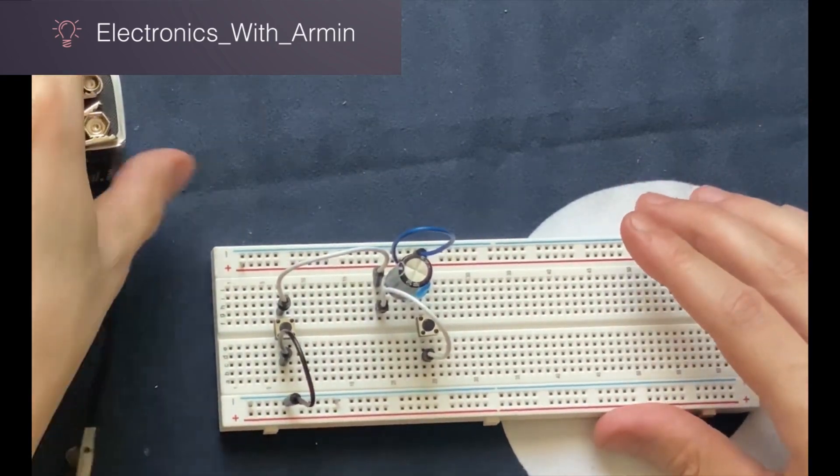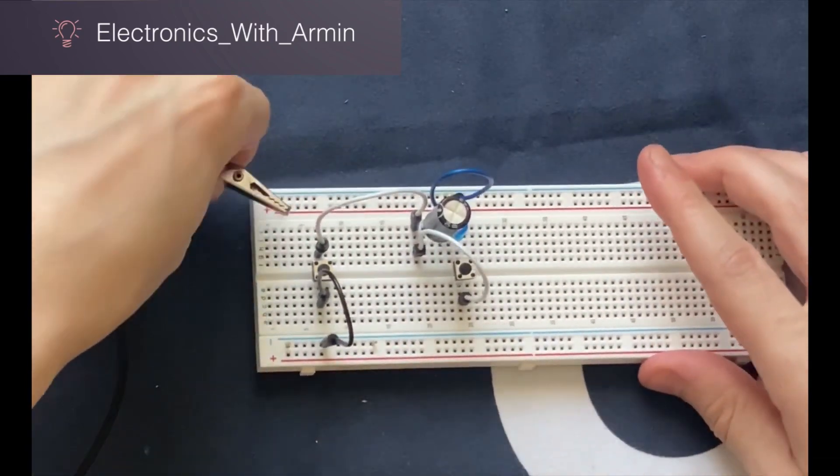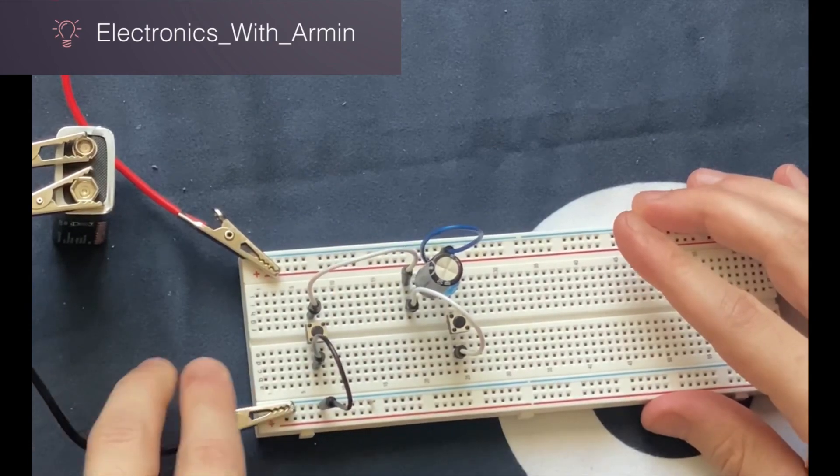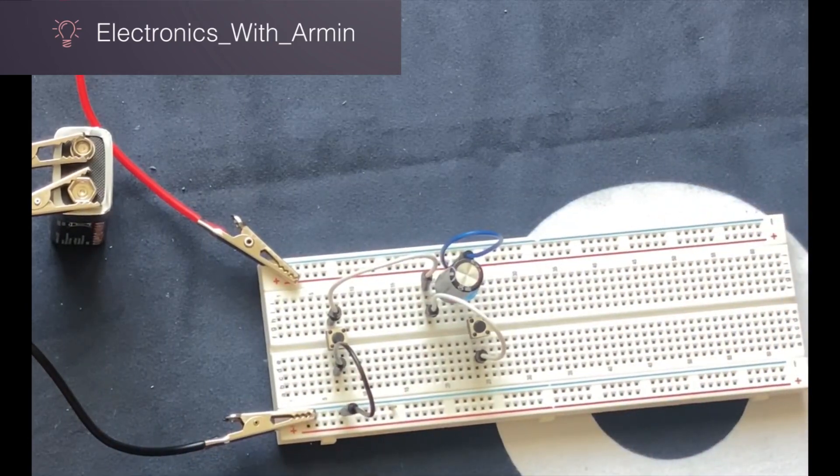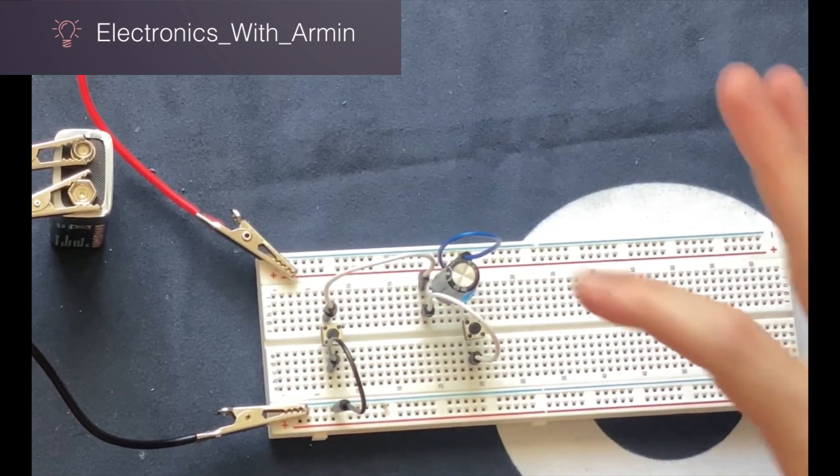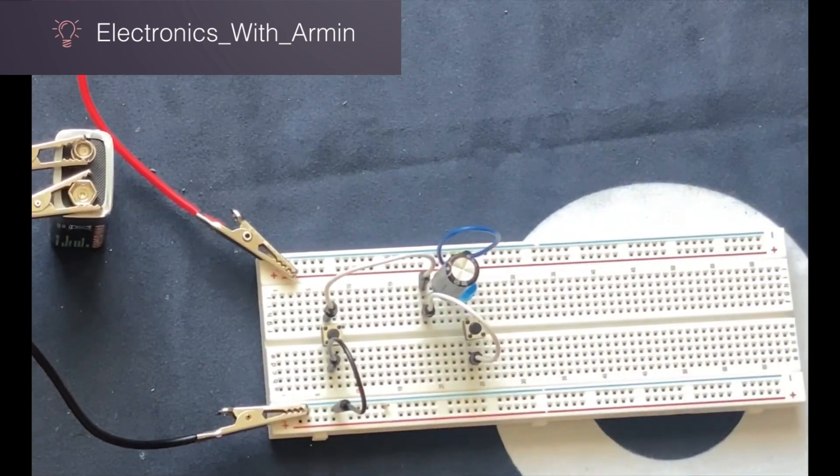We connect the positive side of the battery to the positive rail and negative to negative. Now in this circuit, we are going to observe the process of charging and discharging of the electrolytic capacitor.